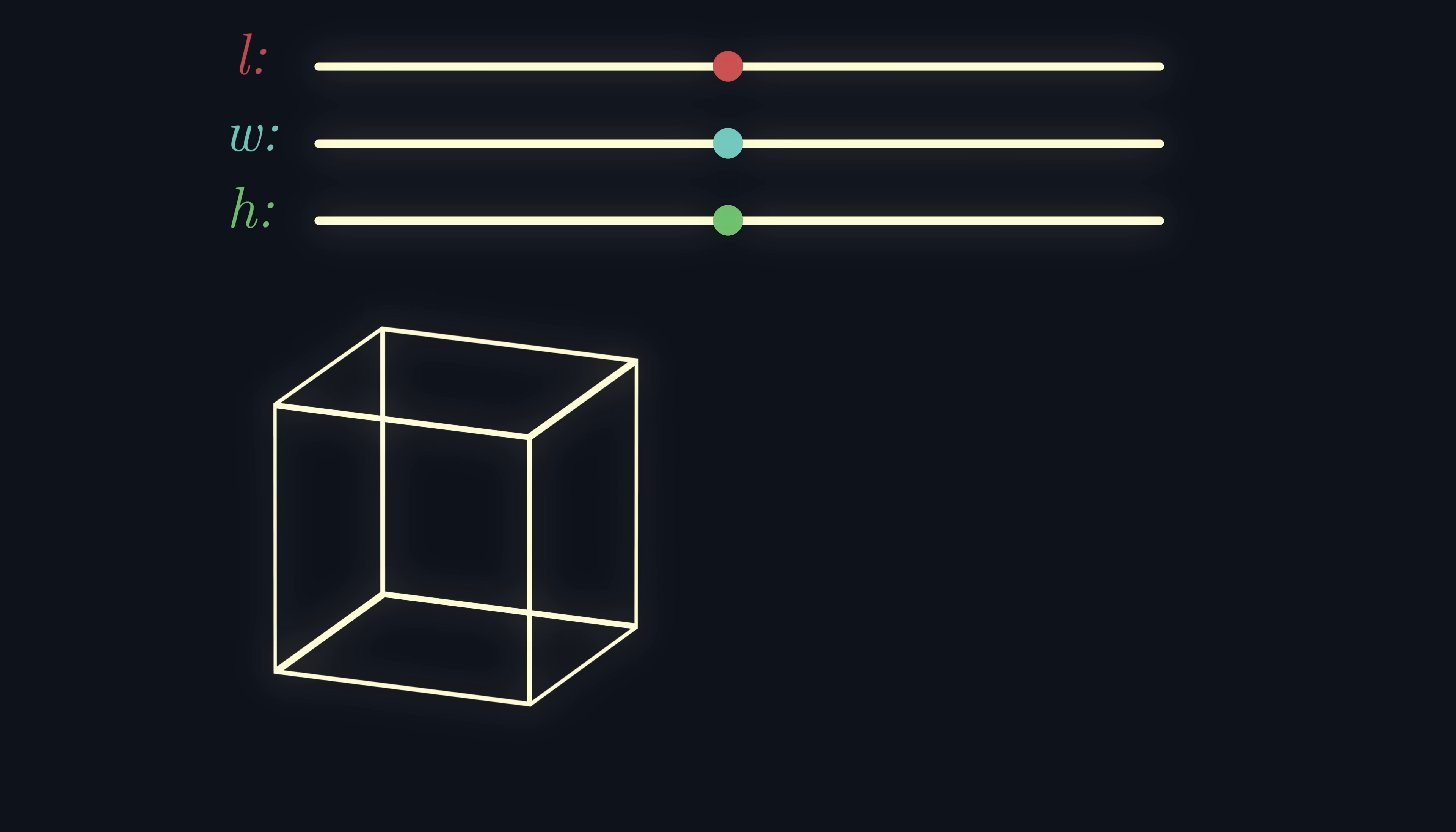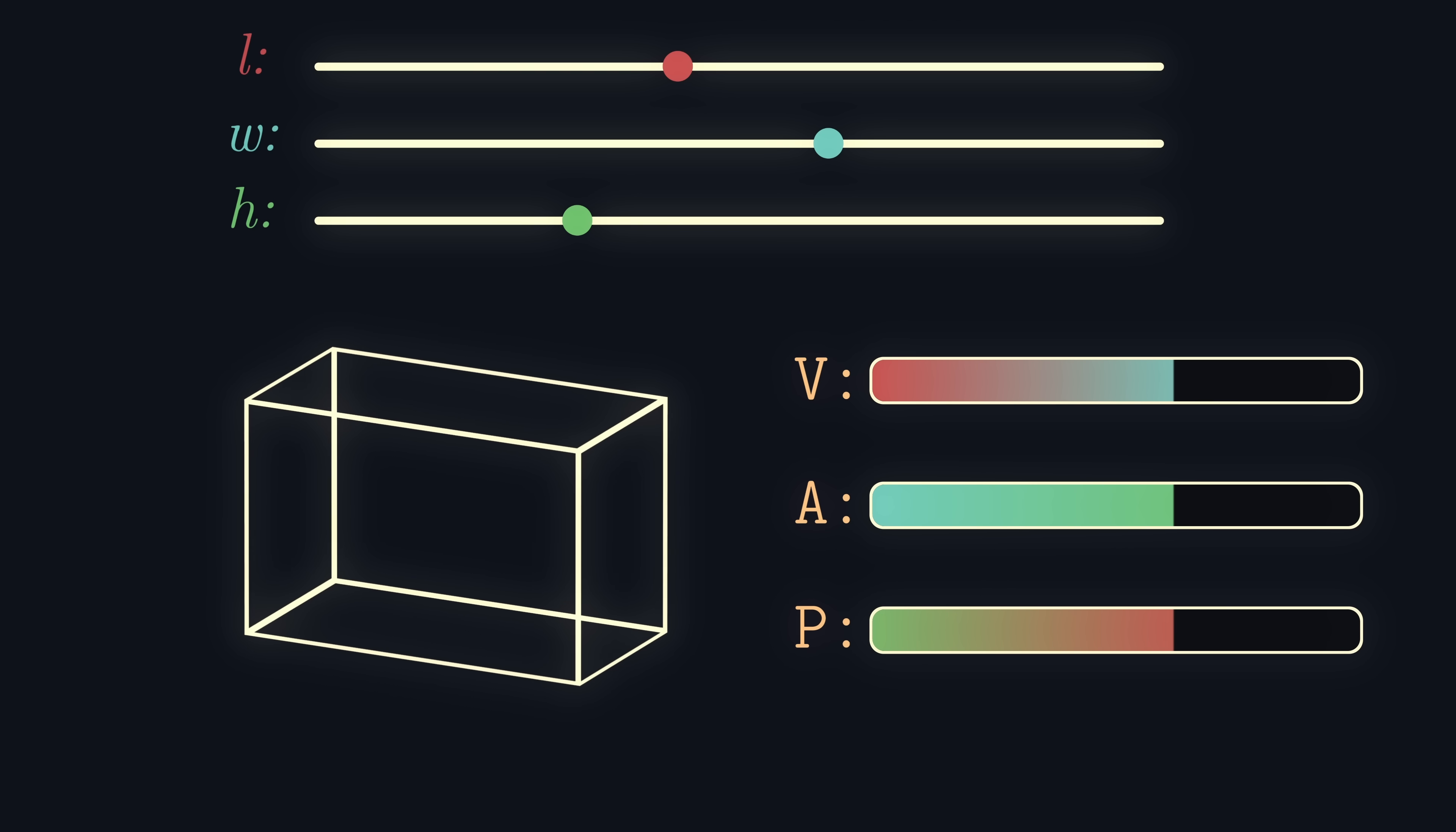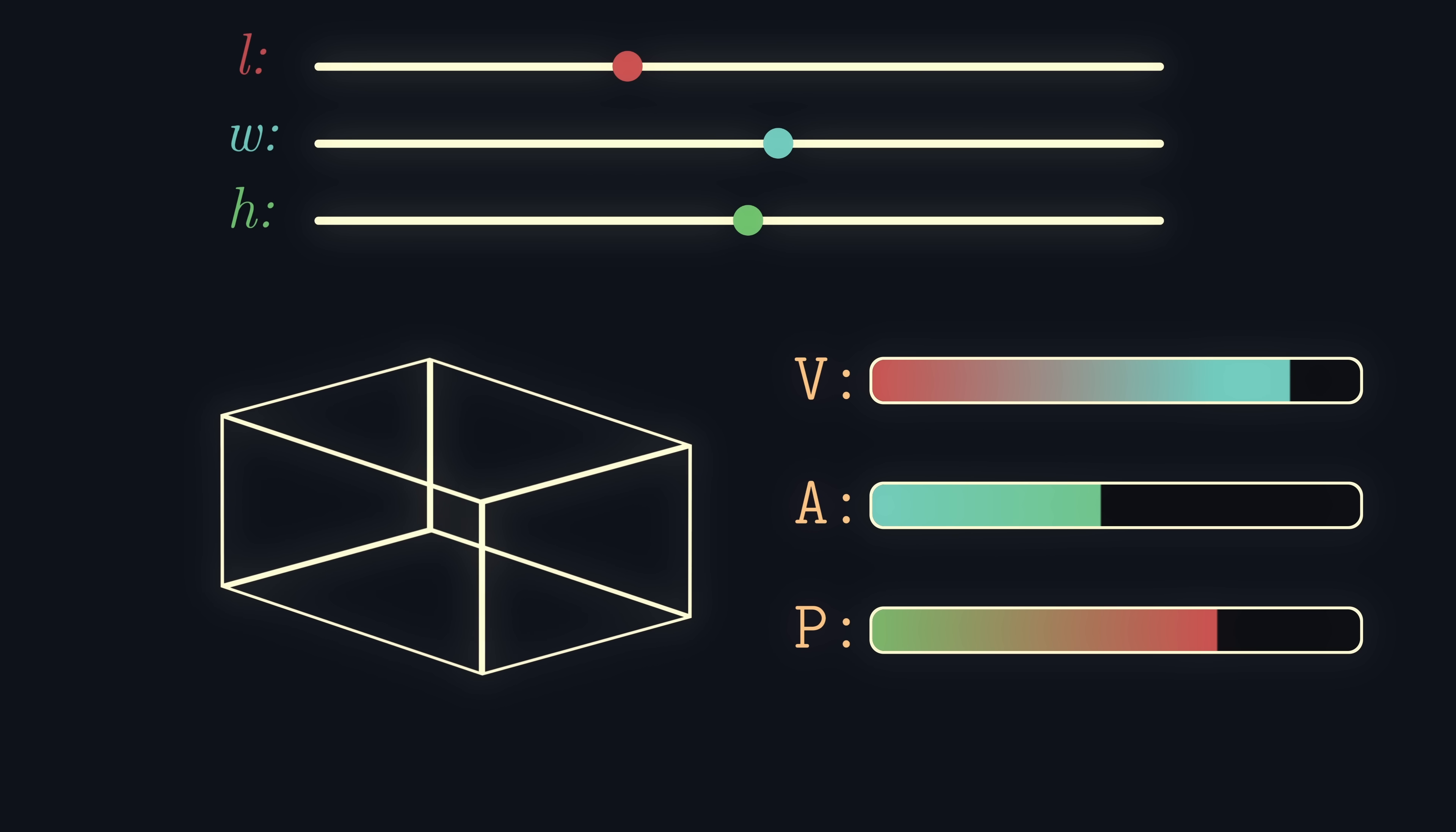The task is to find a rectangular cuboid where the volume, surface area, and perimeter are numerically equal. Assuming you've looked at the thumbnail, you already know this is impossible, but why? Keep watching and I'll tell you what is hidden behind this seemingly harmless problem.